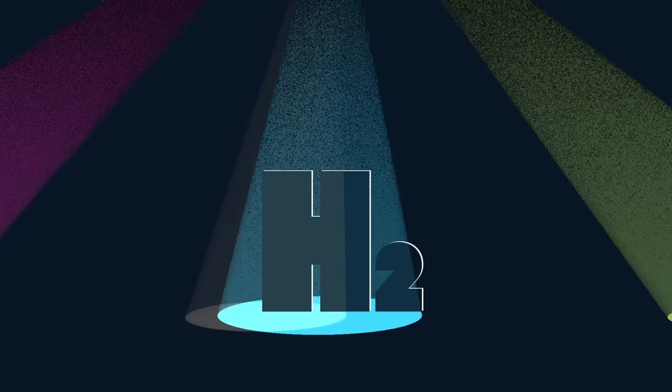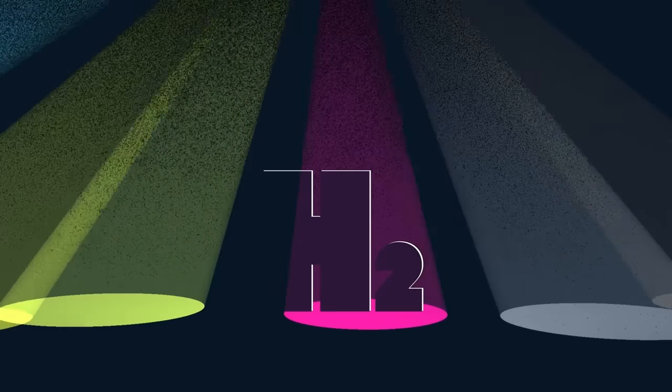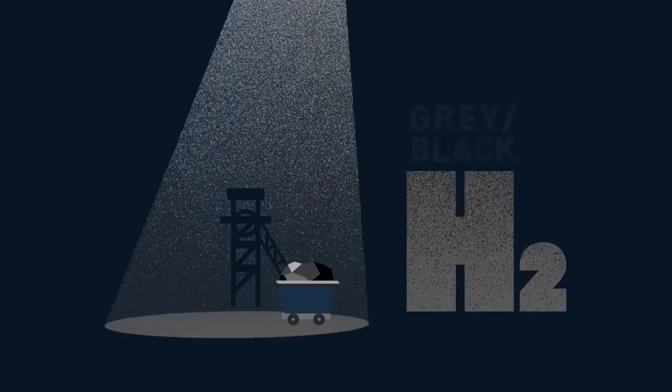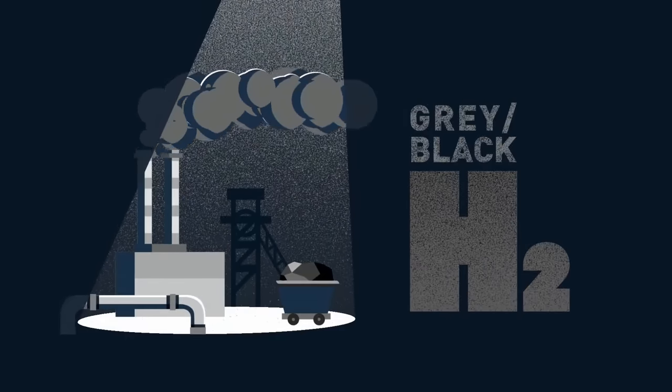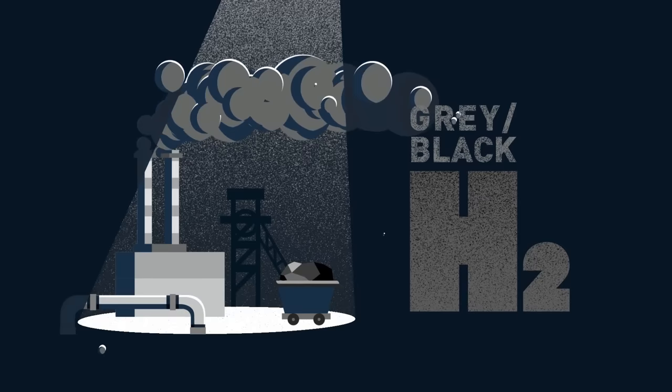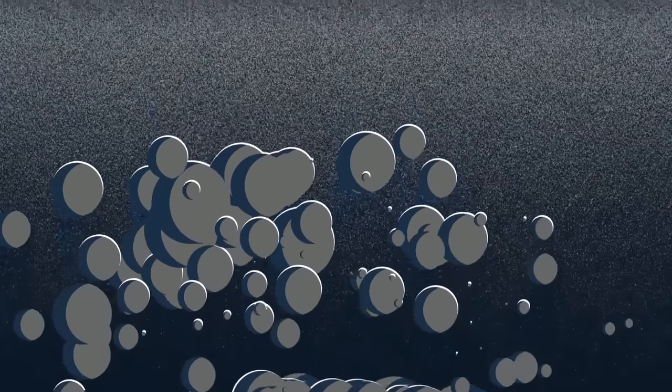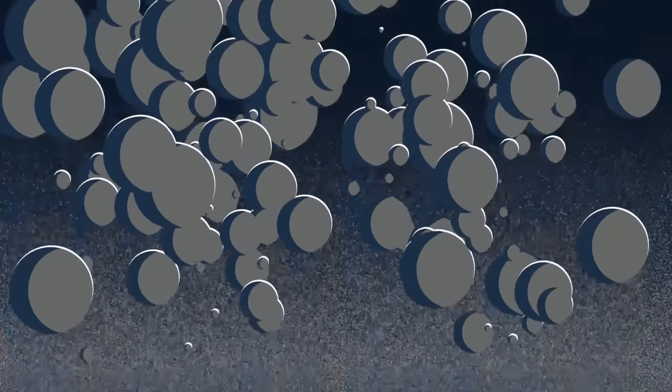Much confusion starts with the fact that hydrogen can be produced in various ways, which are named in different colors. The currently dominant form is grey or black hydrogen, produced by combining fossil gas or coal with steam. Its production releases large amounts of carbon dioxide into the atmosphere.